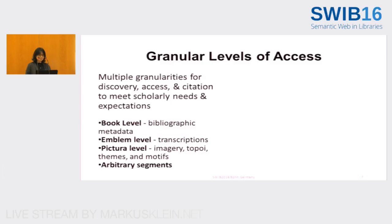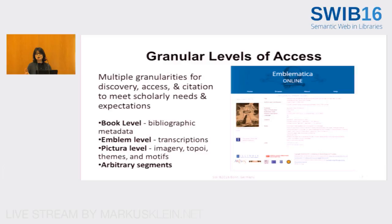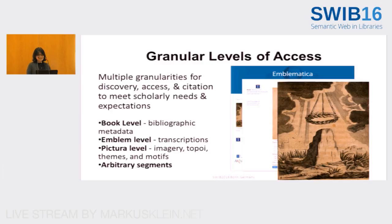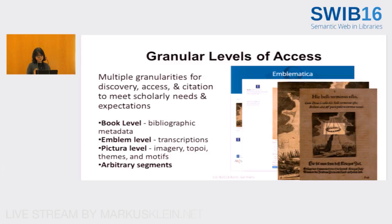Because we have these granular levels of metadata, we can provide multiple granularities for discovery, access, and citation services in Emblematica Online to meet scholarly needs and expectations. By using bibliographic metadata, we can provide book-level discovery and access service. By using imagery, topoi, themes, and motifs, we provide a picture-level display and access service. In addition to that, we allow scholars to choose arbitrary segments of the images and provide URLs for that image selection so scholars can use those URLs for their publications.